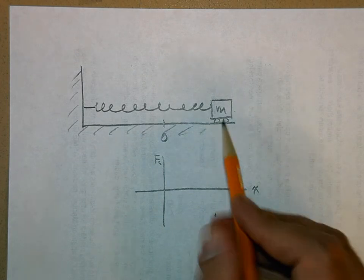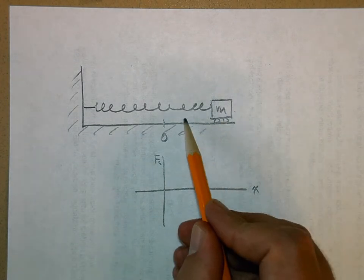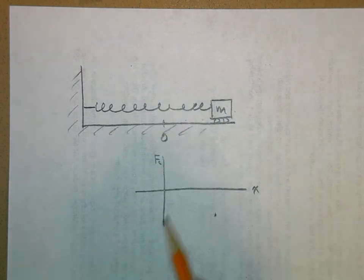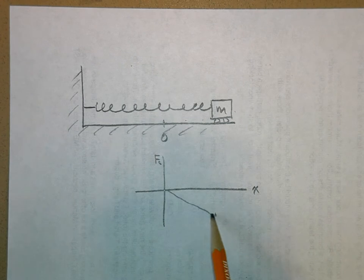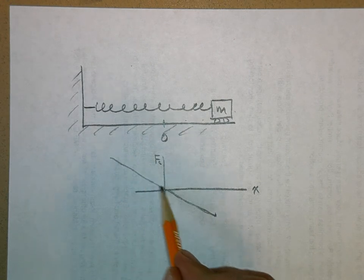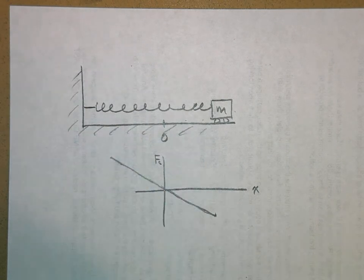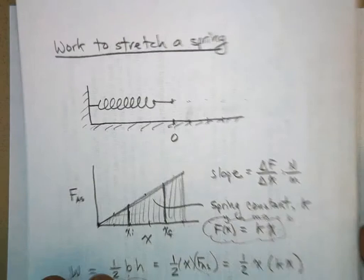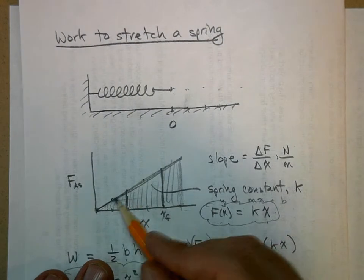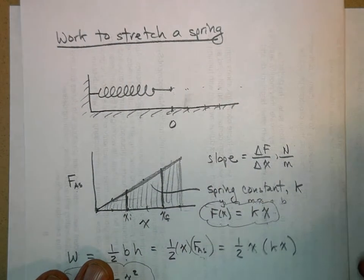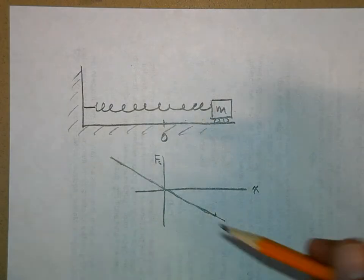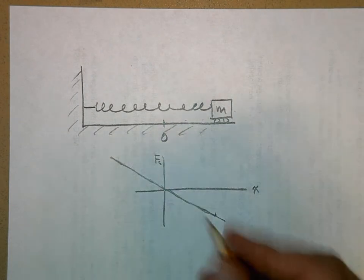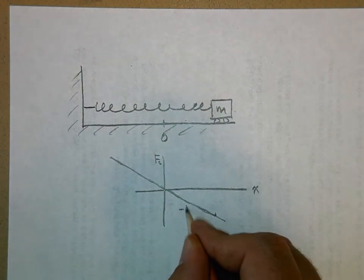And then, as the massive object here gets closer and closer and closer to this zero, the force becomes less and less and less. And here we have that straight line again. Now, it's the same slope that we had before in this graph. It's the same slope that is k, the spring constant, but now the force is negative instead of positive. So, it's a negative slope. So, this has a negative k slope.